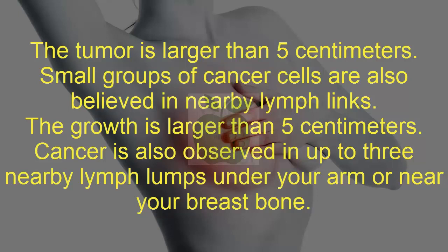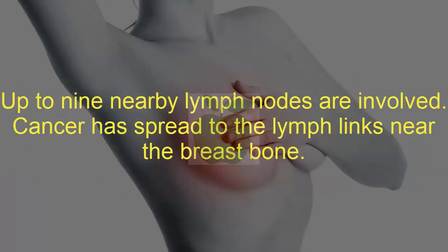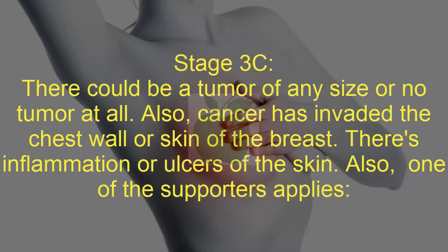The growth is larger than 5 centimeters and cancer is also observed in up to 3 nearby lymph nodes under your arm or near your breastbone. In stage 3B, a growth of any size is found and cancer cells are found in the chest wall or skin of the breast. These areas may appear red or have ulcers. Also, up to nine nearby lymph nodes are involved or cancer has spread to the lymph nodes near the breastbone.